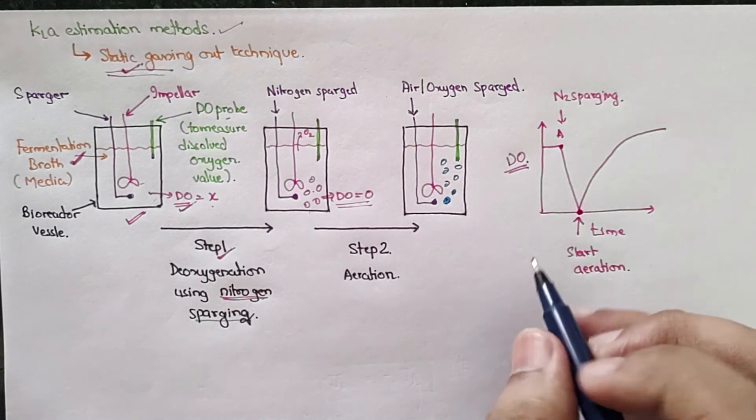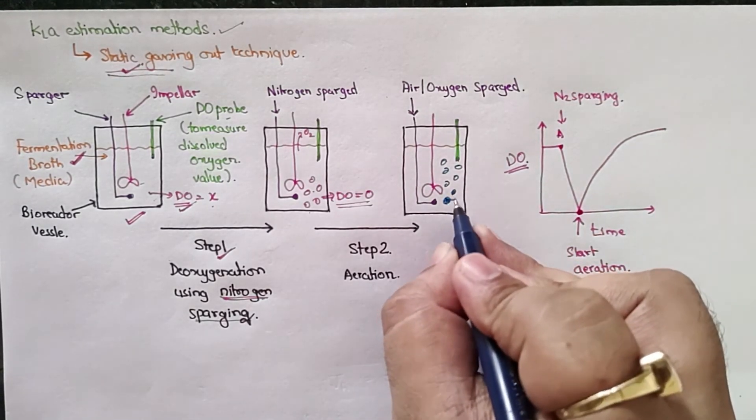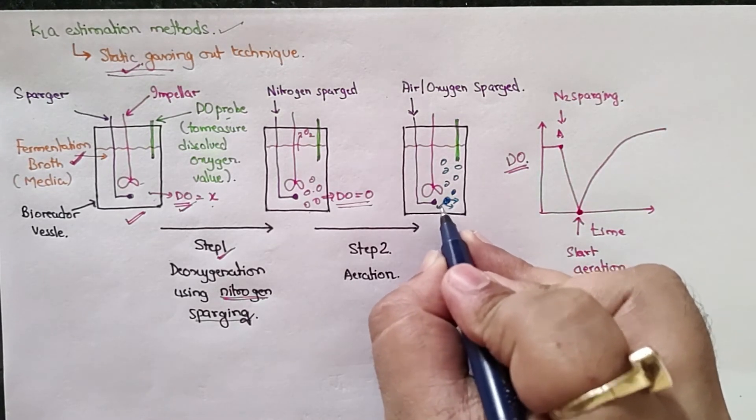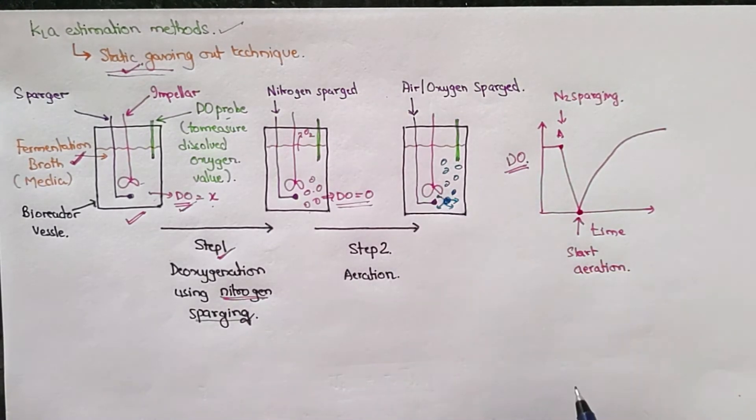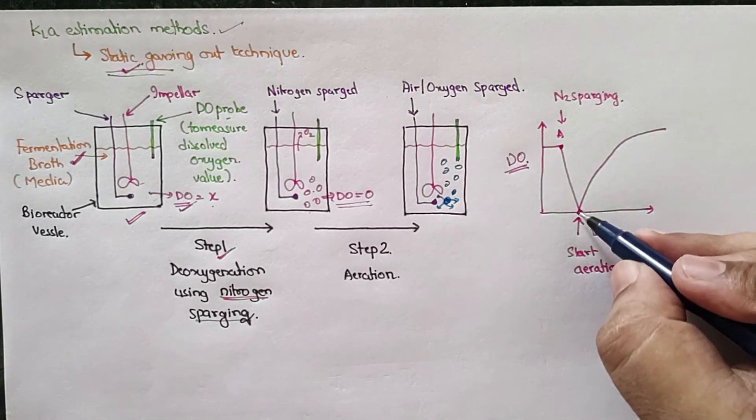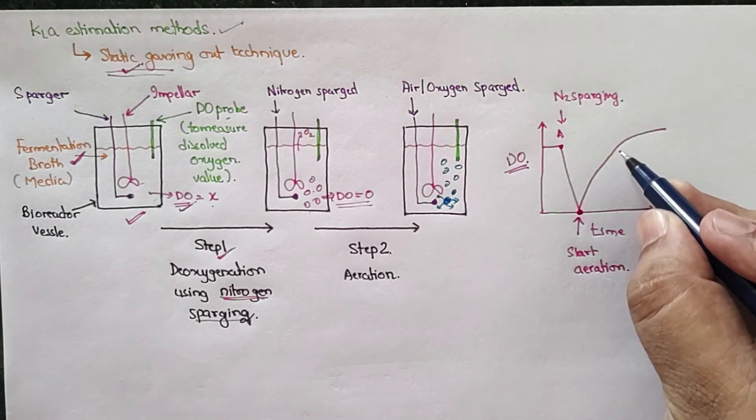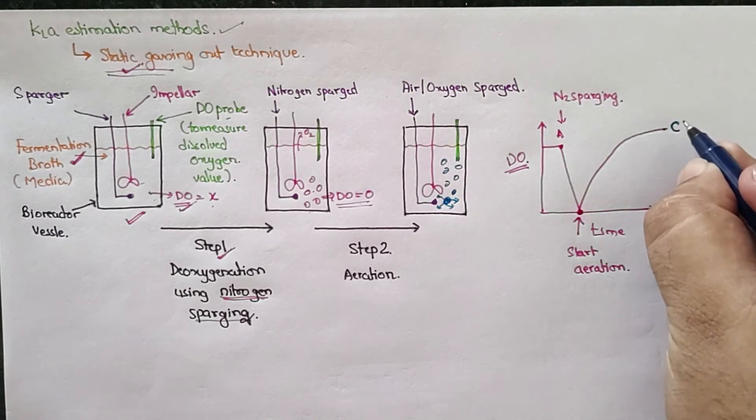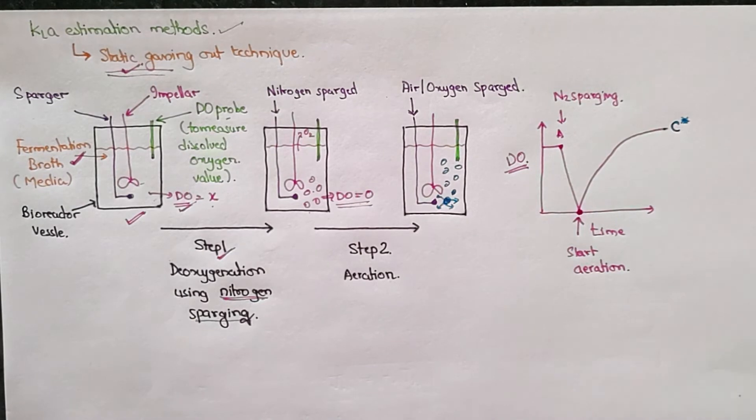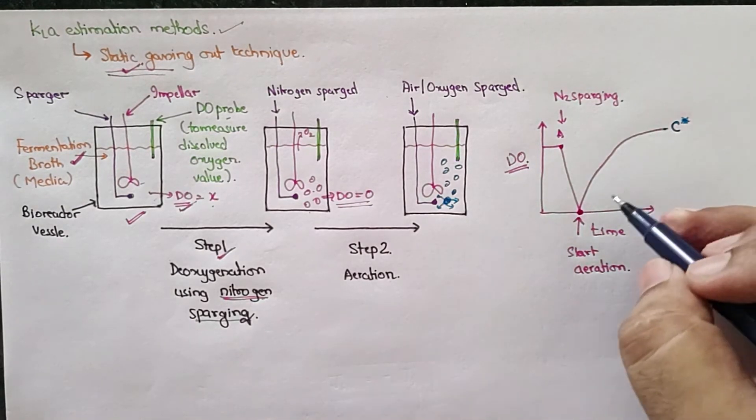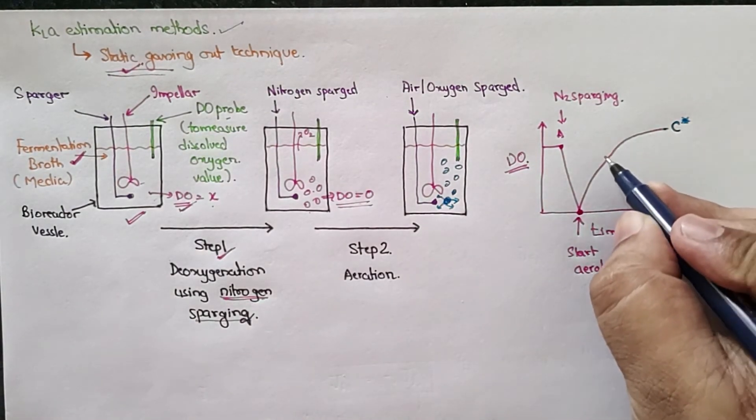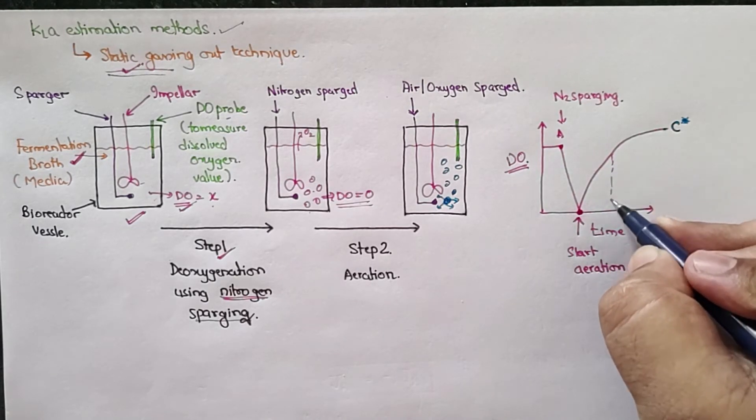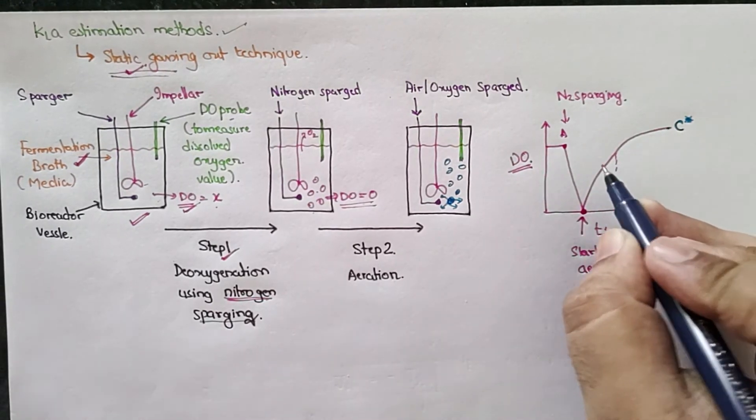So oxygen from the bubble will start moving into the fermentation broth, and slowly the concentration of oxygen starts rising until it reaches a saturation point that is called C star.